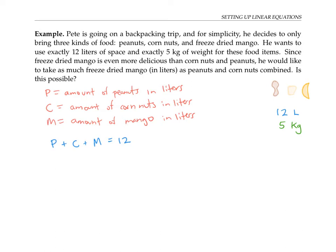Now I also know that the weights of these food items need to add up to exactly five kilograms of weight. To write this condition as an equation, I'm going to need to know how much P liters of peanuts weighs in kilograms. And similarly, for the corn nuts and the mango.